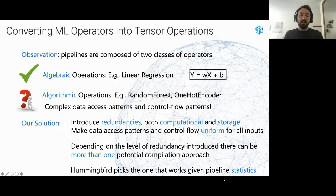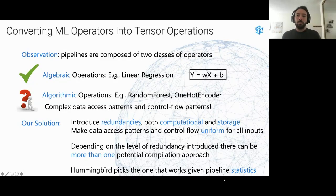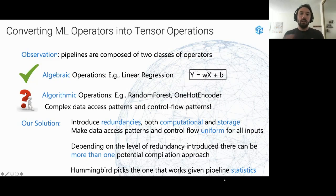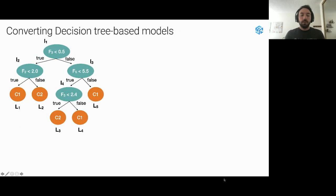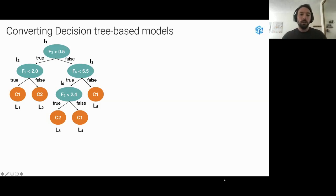Based on the amount of redundancy introduced, we can have different ways of compiling traditional operators. In Hummingbird, we implemented a simple heuristic for trees that picks the right implementation based on how many trees are in your ensemble or how deep those trees are.